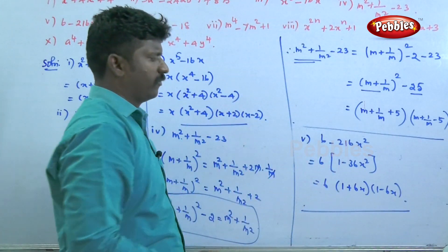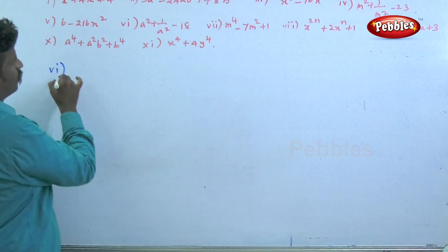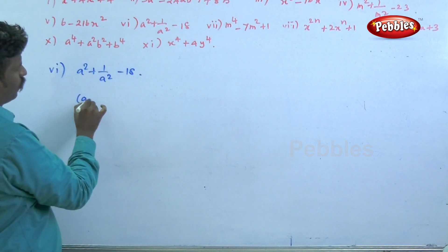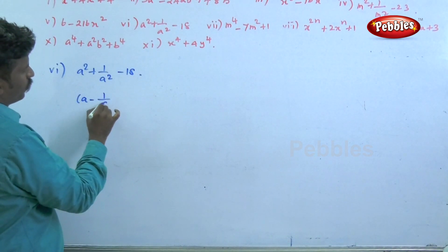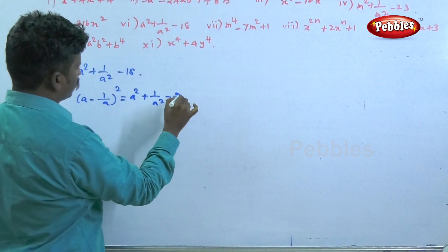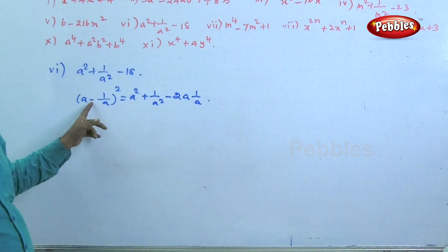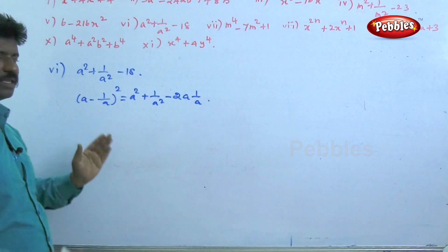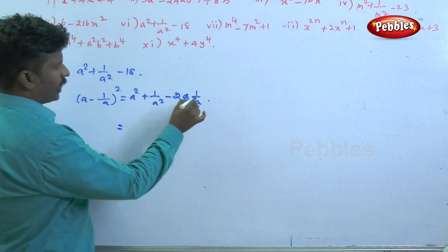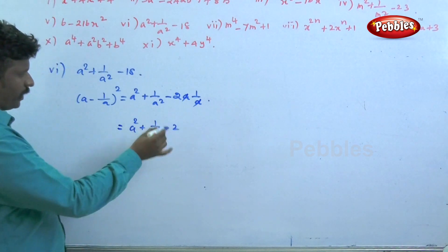The sixth question: a squared plus 1 by a squared minus 18. We use the formula a minus 1 by a whole square equals a squared plus b squared minus 2ab. We need to determine which identity is useful here. Since a squared plus 1 by a squared minus 2 equals a minus 1 by a whole square, we have a minus 1 by a whole square plus 2 equals a squared plus 1 by a squared.